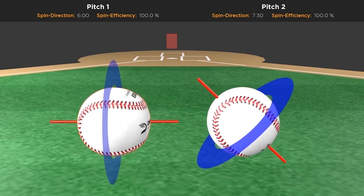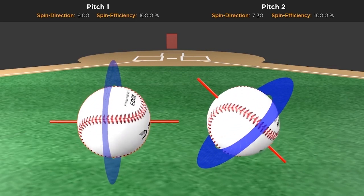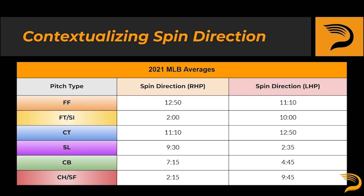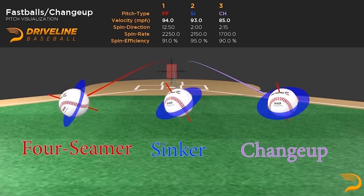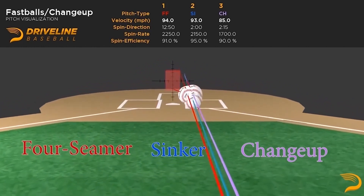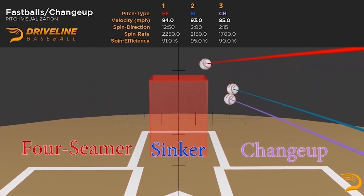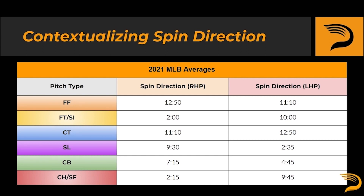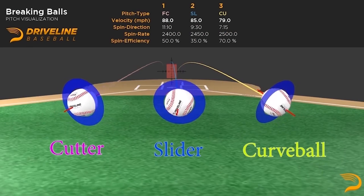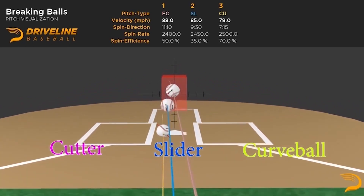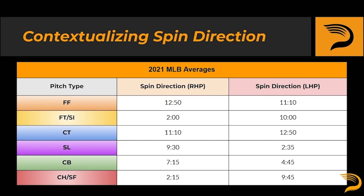A 7:30 curveball would have equal parts downward vertical break and horizontal break — meaning topspin and sidespin — hence the name slurve. Looking at 2021 spin direction averages by pitch type: sinkers have a higher proportion of sidespin on average, whereas the four-seamer is equipped with primarily backspin. The changeup's spin direction is fairly close to that of the sinker, making it generally easier to create separation off of a four-seam relative to a sinker. Cutters on average have a higher proportion of backspin relative to sidespin, with a spin direction of 11:10 on average, though gyroscopic spin is still primarily the main spin involved. The average slider primarily has gyroscopic spin, but its useful spin consists mostly of sidespin. The average curveball has very similar amounts of topspin and sidespin, with an average spin direction of around 7:15.